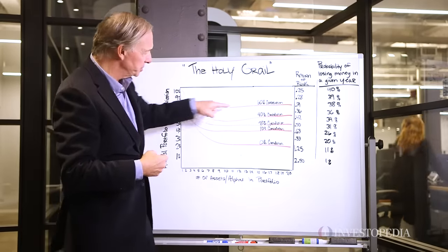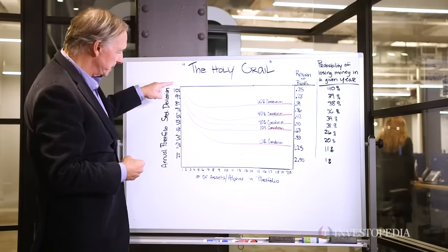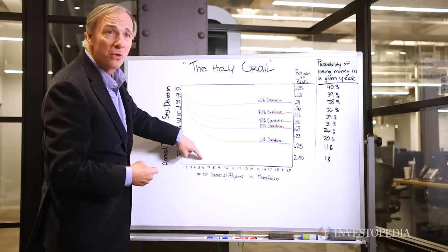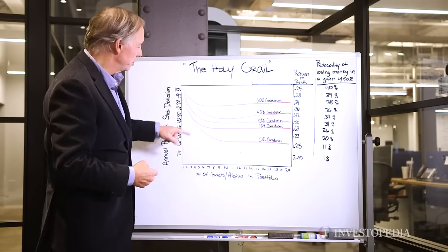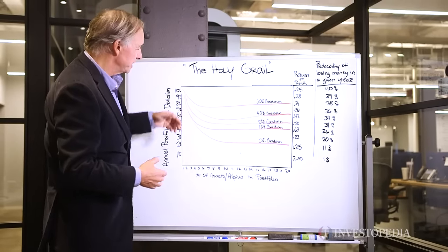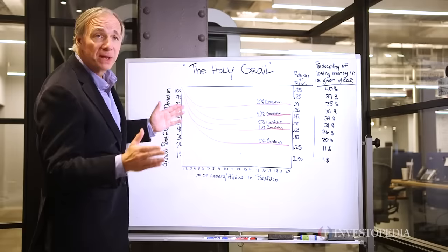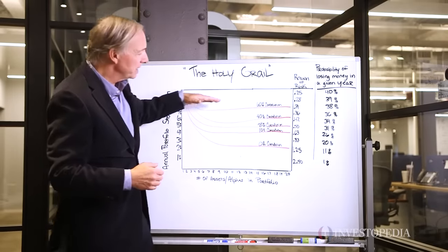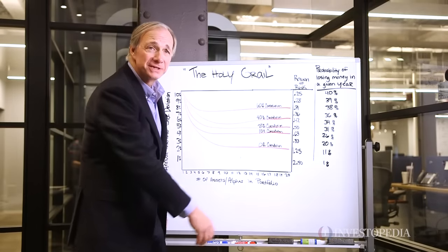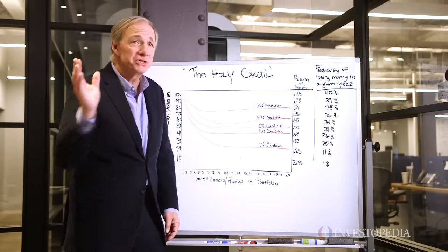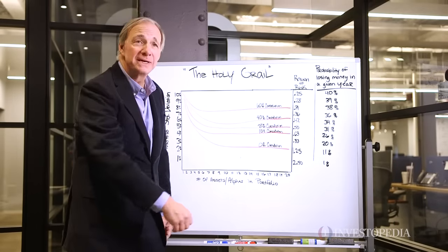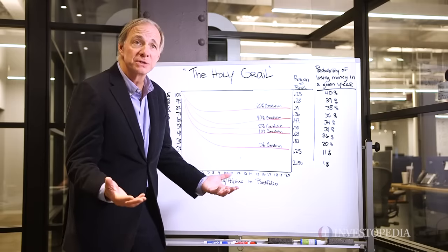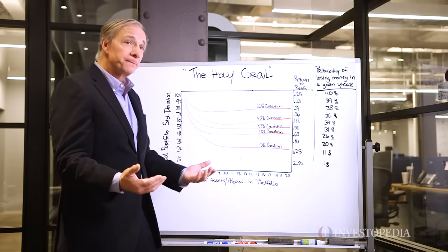If it has a 60% correlation and you have three or four assets, you will get a reduction that maybe is about 15%. And you could add in a thousand assets — if they're 60% correlated, you're not going to reduce your risk much. Okay, that's important.